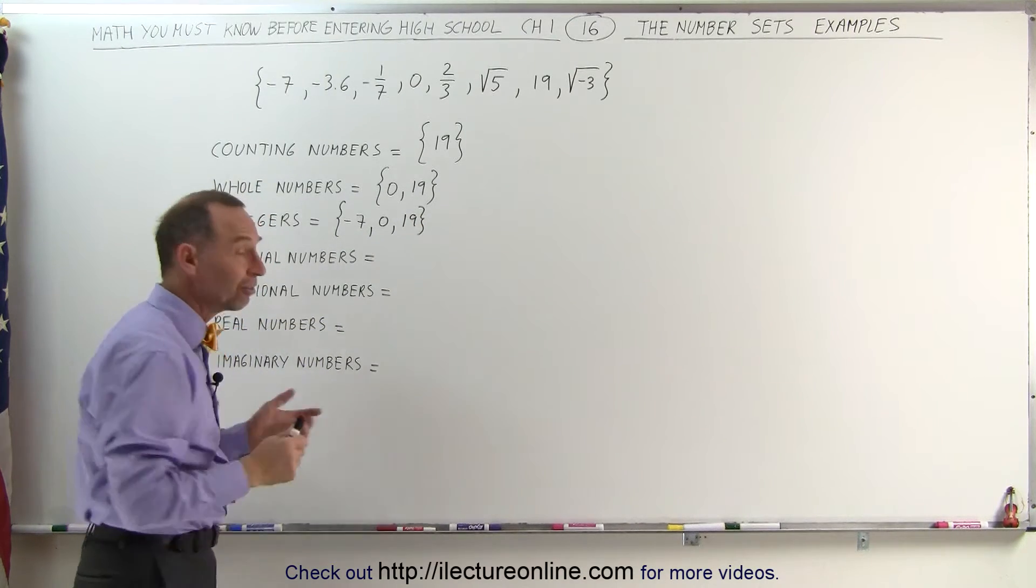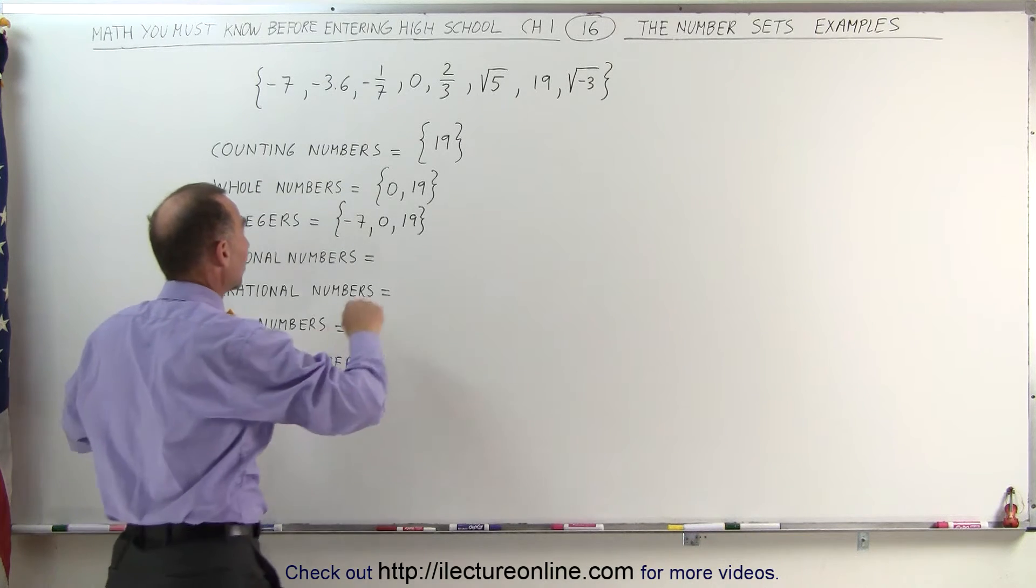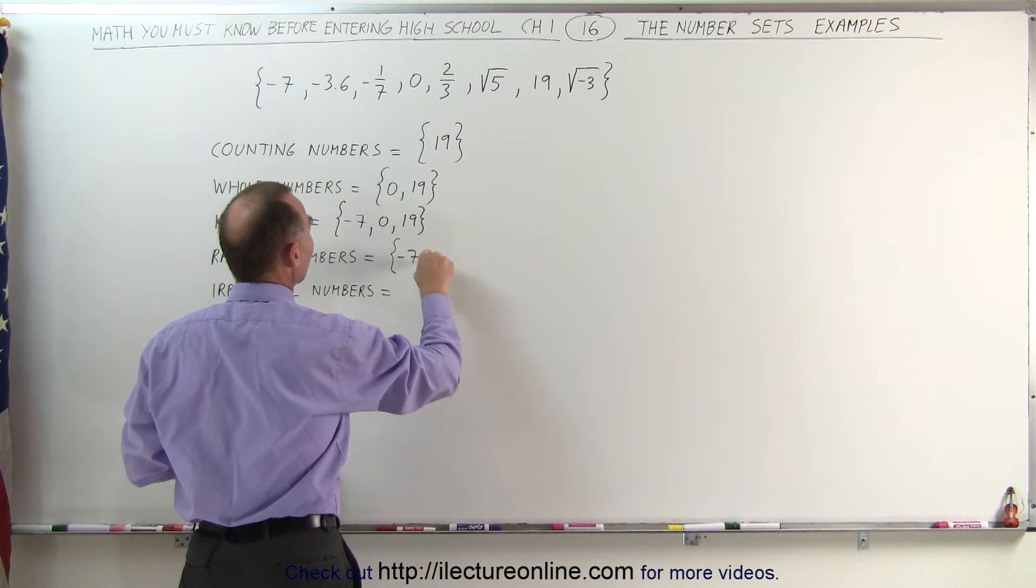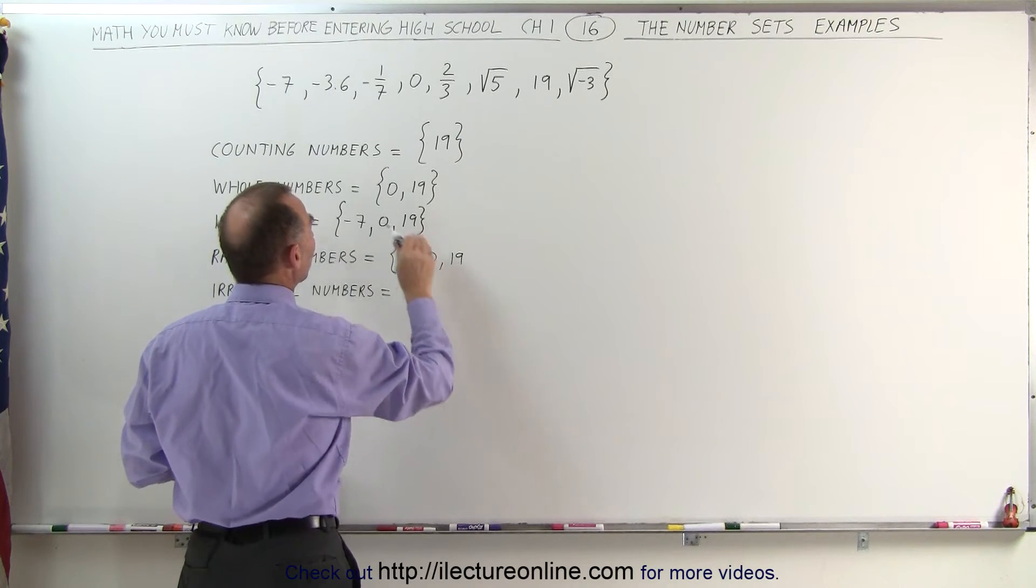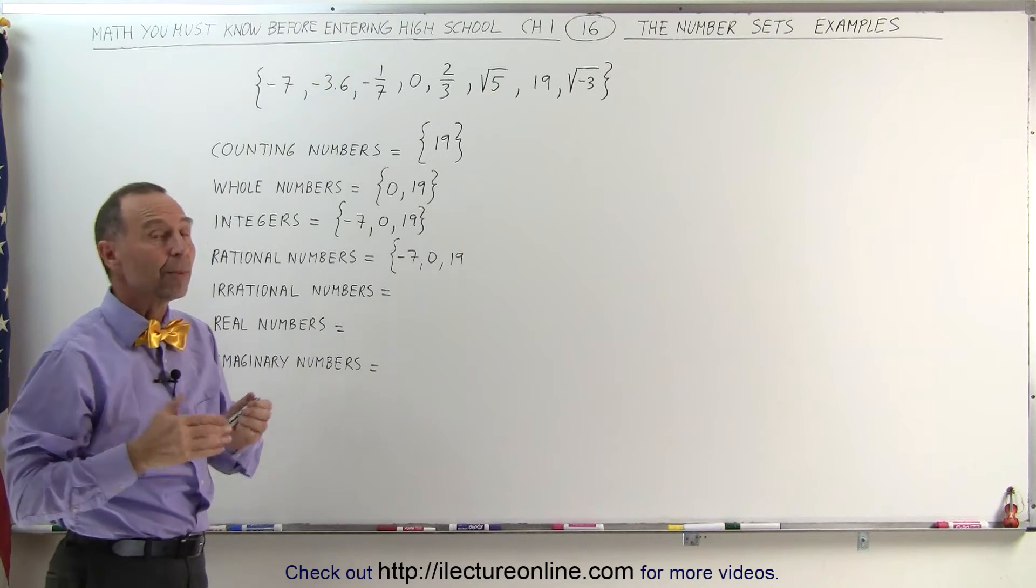Rational numbers. Well, rational numbers are all the whole numbers, all the integers really. So let's start with all the integers. So negative 7, 0, and 19. So all integers are also rational numbers. But they're also the numbers that can be put in the form A over B.